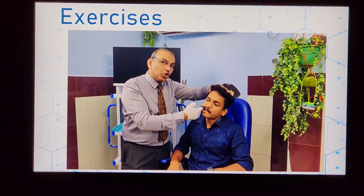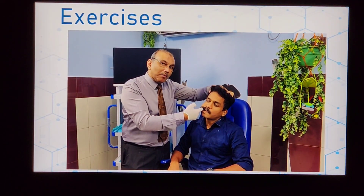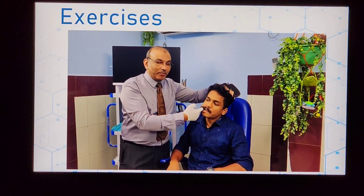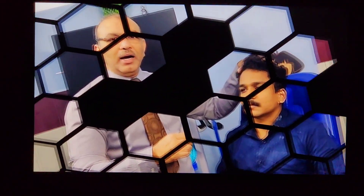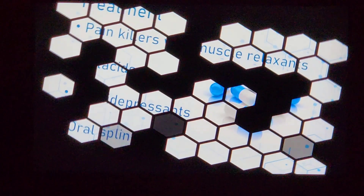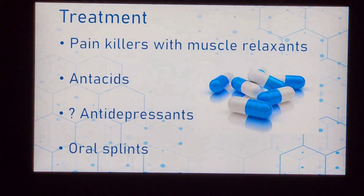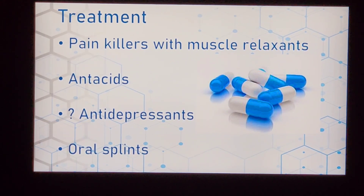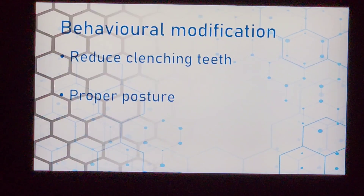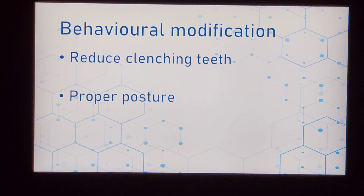To summarize the treatment so far: jaw rest, contrast bath, massage, and exercises — do these daily for at least five to seven days. The doctor will prescribe a few medicines, mainly a painkiller with a muscle relaxant along with an antacid. In chronic cases, antidepressants may also be prescribed. Behavioral modification includes reducing the habit of clenching the teeth.